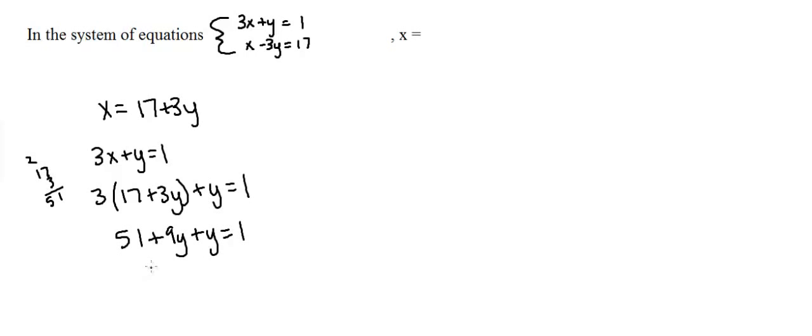Combining like terms, we'll get 51 plus 10y equals 1. Then we'll get 10y equals negative 50. I just subtracted 51 from both sides and then we will get y is equal to negative 5.